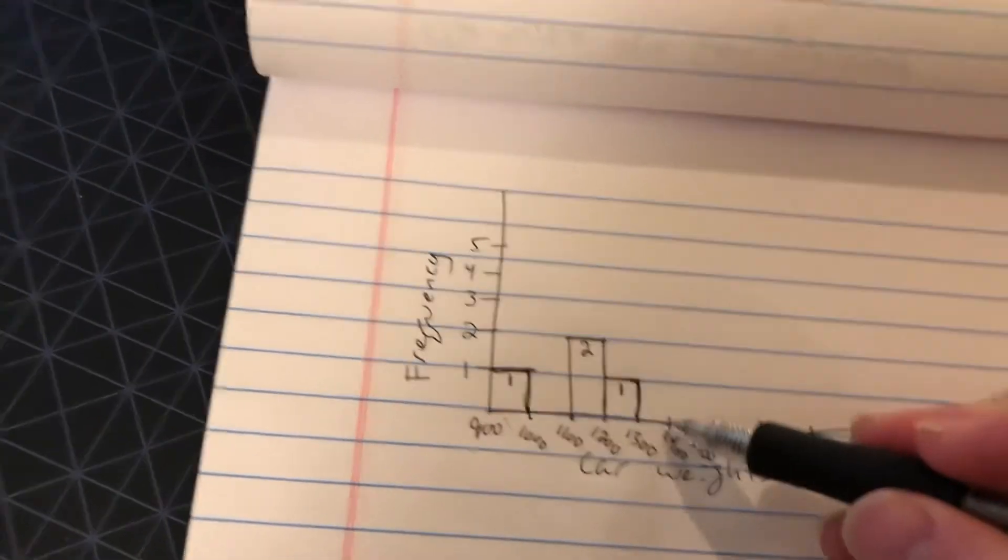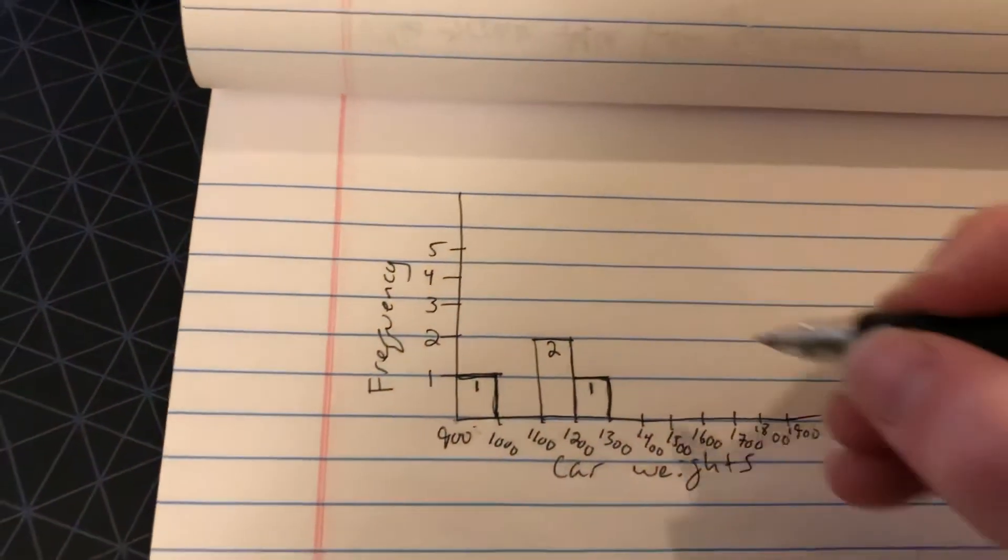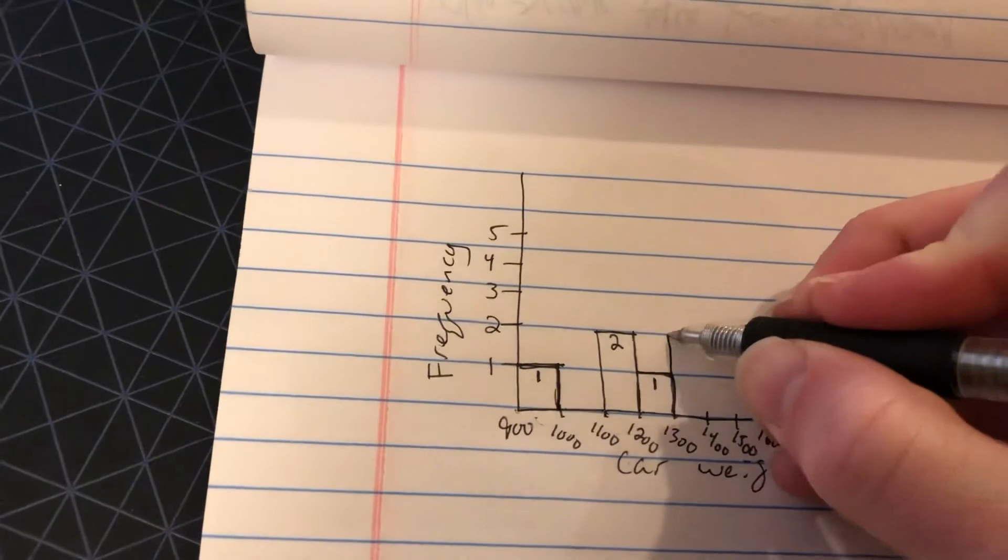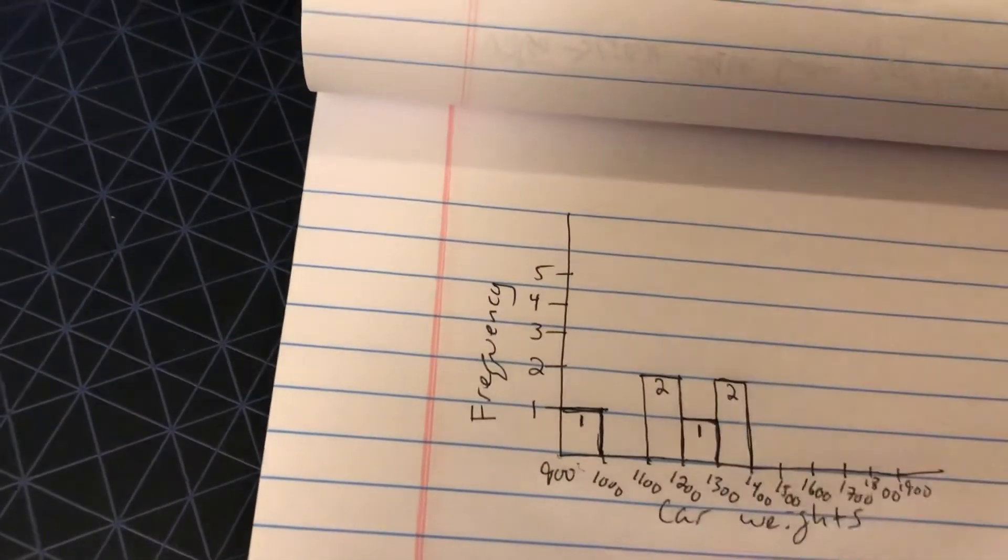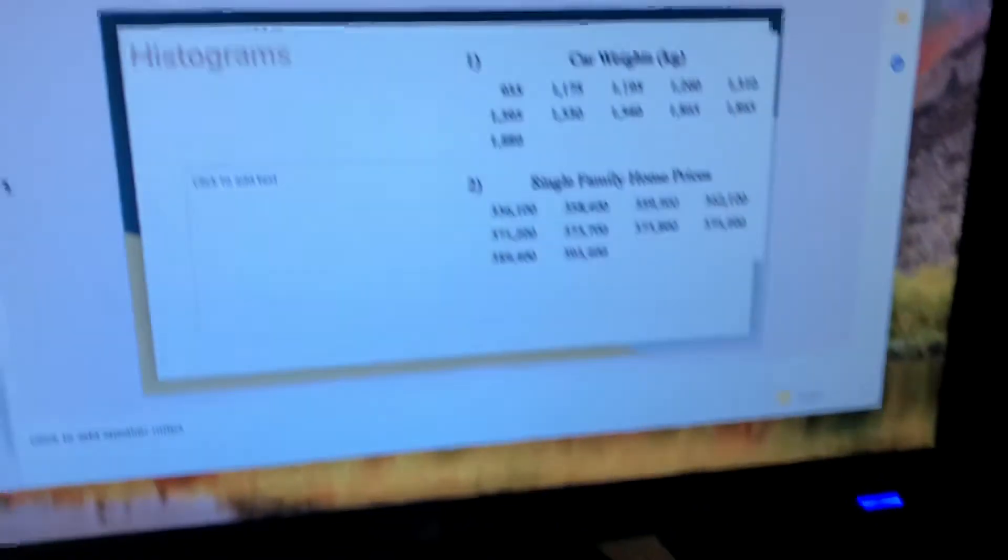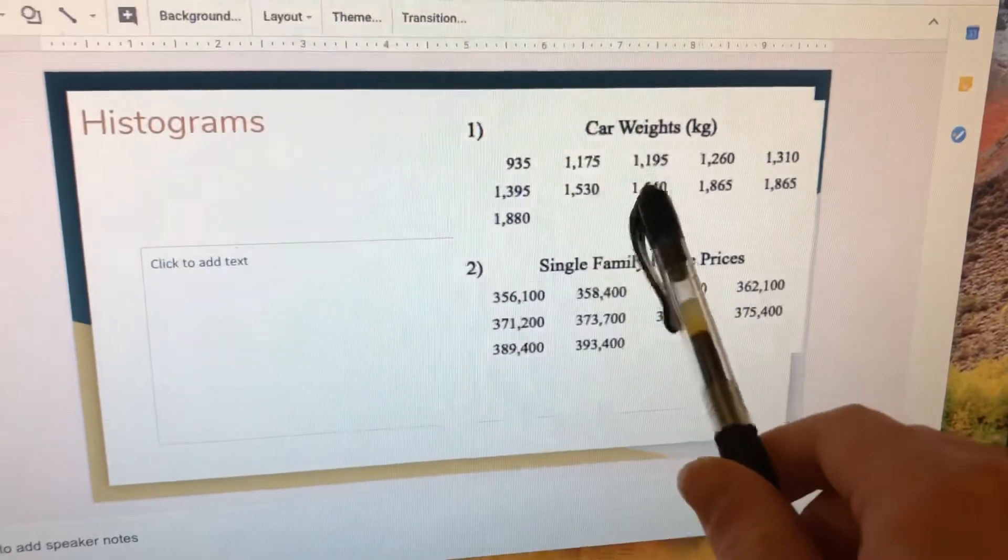Next, 1,300 to 1,400. I just see one, two cars there. So I'll make that entire bar go up to two and label it so it's clear. There's nothing in between 1,400 and 1,500. And I have one, two cars between 1,500 and 1,600.